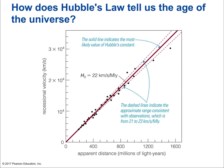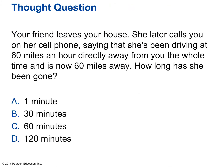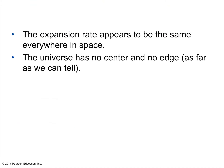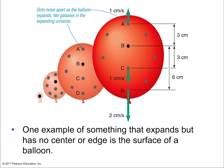How does Hubble's law tell us the age of the universe? Consider: your friend leaves your house, drives at 60 miles per hour directly away, and calls saying she's now 60 miles away — she's been gone exactly one hour. That same idea applies to astronomy. The expansion rate appears to be the same everywhere in space; the universe has no center and no edge as far as we can tell. That means the universe must be expanding from an original point, and we can calculate back how long it's been expanding.